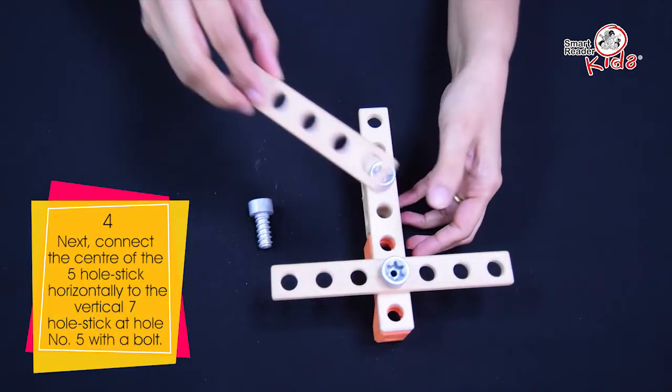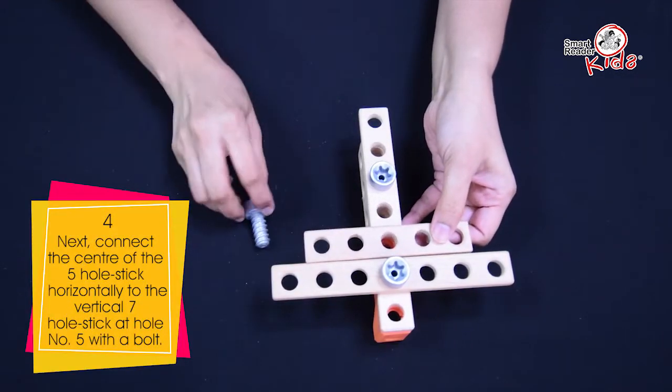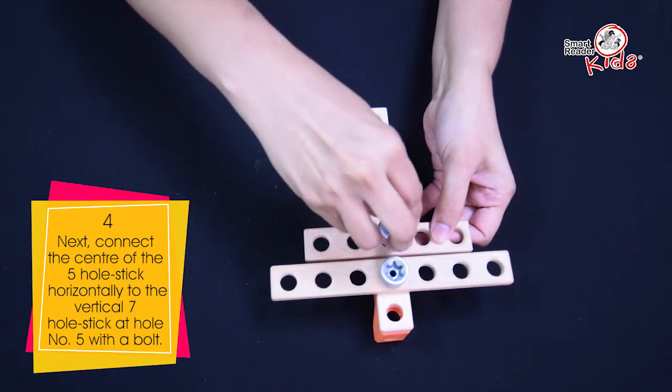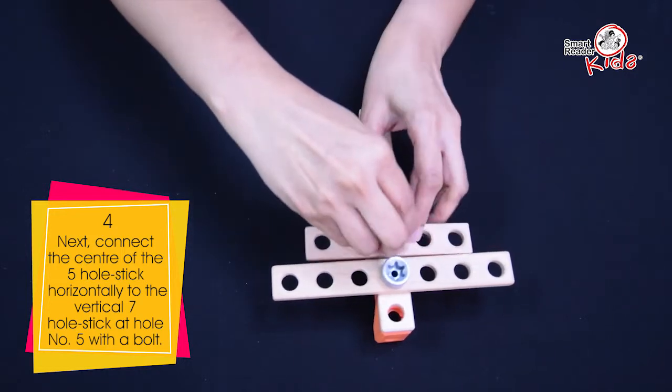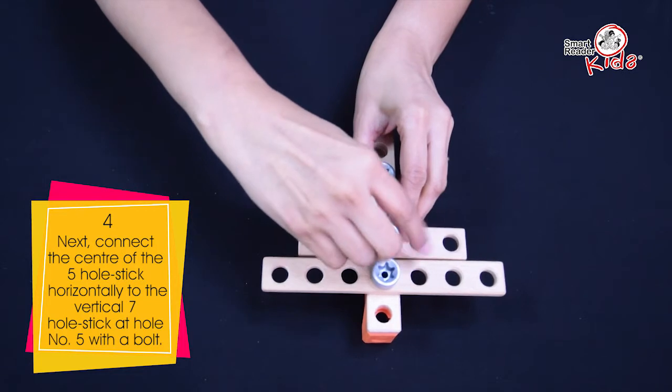Next, connect the center of the 5-hole stick horizontally to the vertical 7-hole stick at hole number 5 with a bolt.